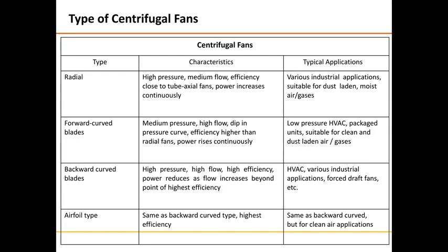First is the radial type of fan. It will have high pressure, medium flow, and efficiency close to tube axial fans. The application is for dust-laden or moist air and gas applications. Forward curved blade fans provide medium pressure and high flow. The efficiency is higher than radial fans and power rises continuously. The application is for low pressure heat ventilation systems, packaged units, and suitable for clean and dust-laden air gases.